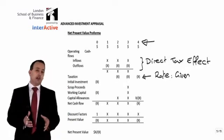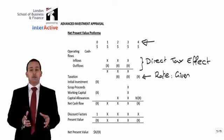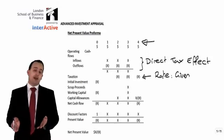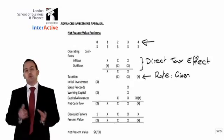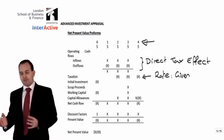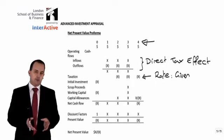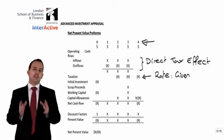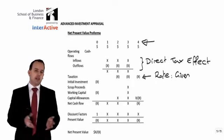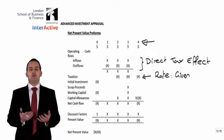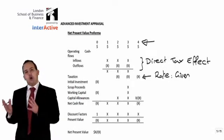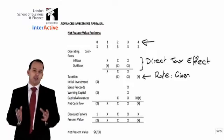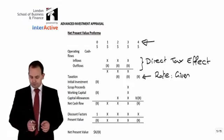The question will also tell you whether the tax is going to be paid in arrears, as it is on this format here, where the tax paid will be one year after your cash flows that have come in. Or it could tell you that the tax is going to be paid in the same year that the liability arises, in which case all these cash flows will be shifted to the left, so they occur one year earlier.